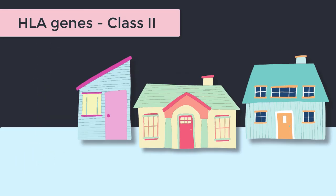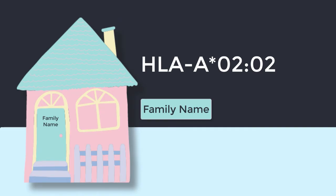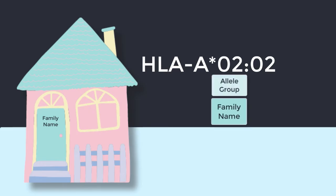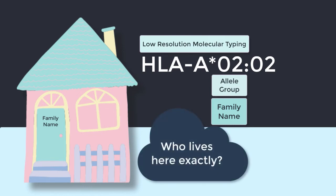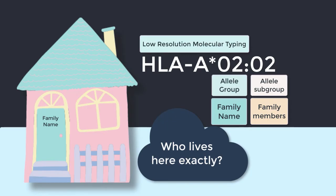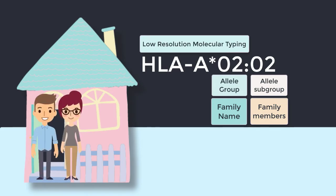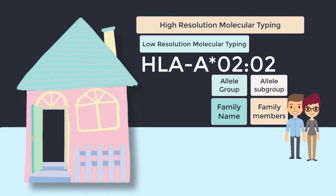That's where the genes are housed, but we need more information than that. As you walk up to the house you'll see the family name — or clan name if you have Scottish genes like me — on the door of the house. Now you know the allele group, the clan name, the surname, and at this stage you have just performed low resolution molecular typing. But we want to take this a step further: we want to know which exact family members of this extended family or clan live inside the house, so we're going to knock on the door and see who's inside — and in doing so we have just performed high resolution molecular typing.